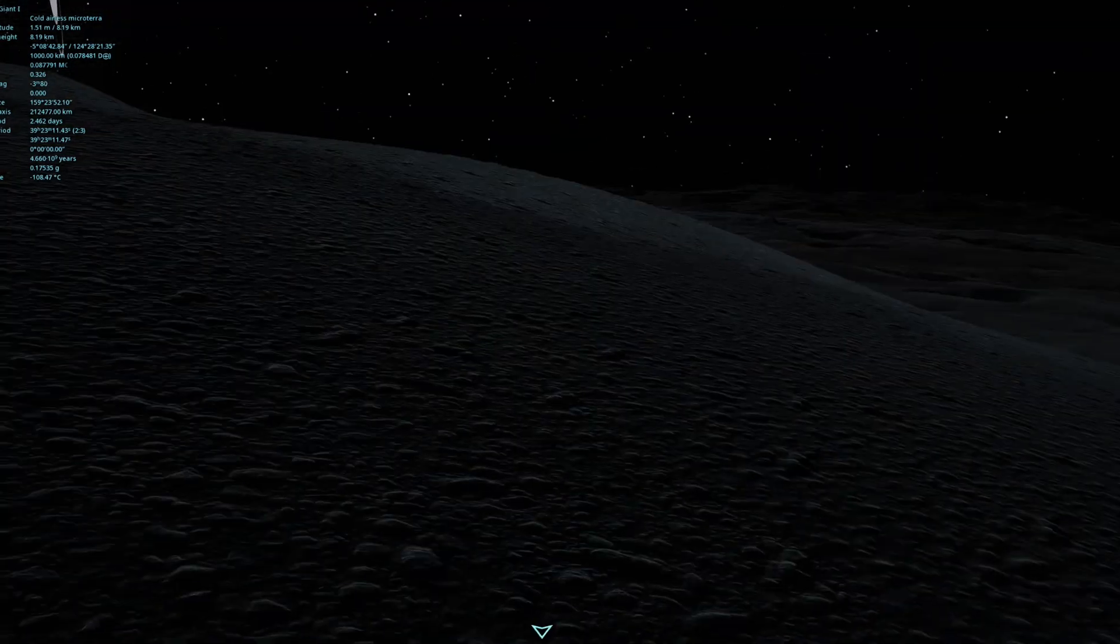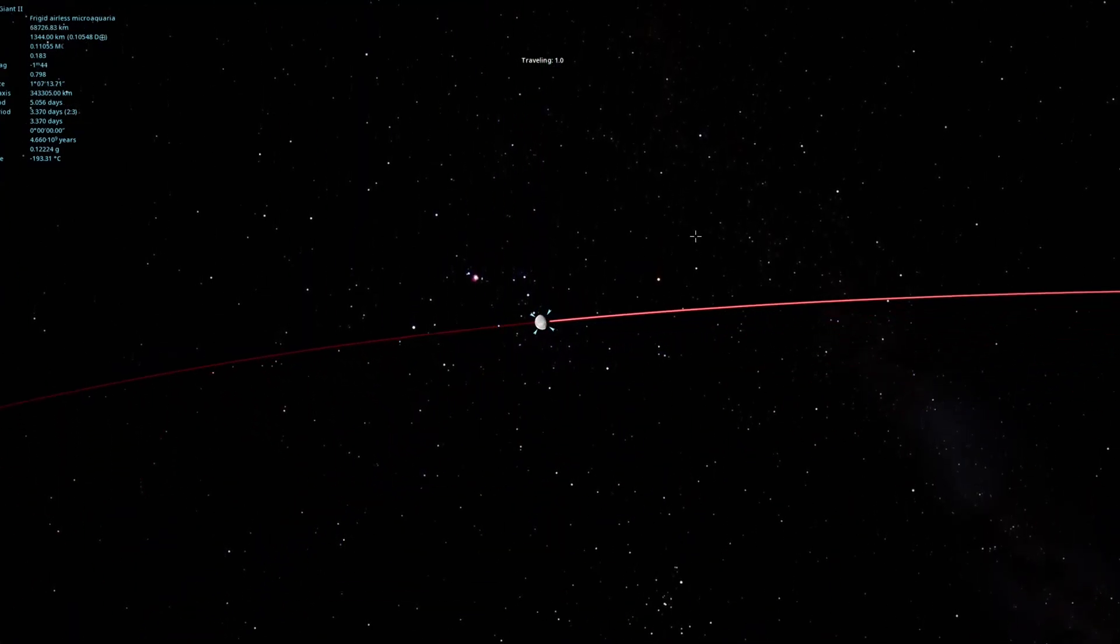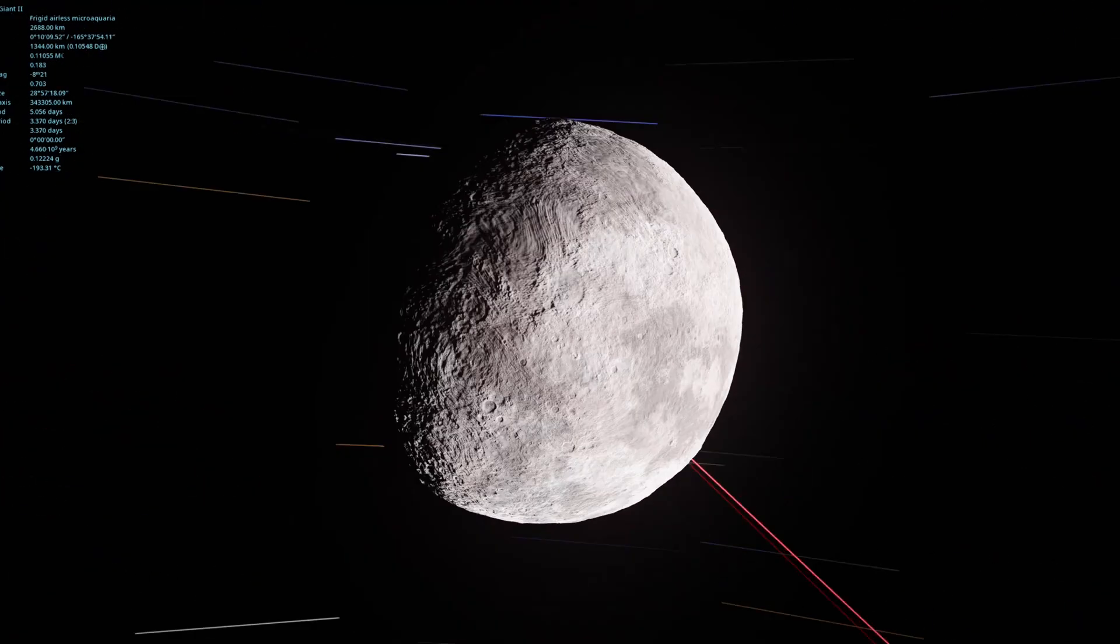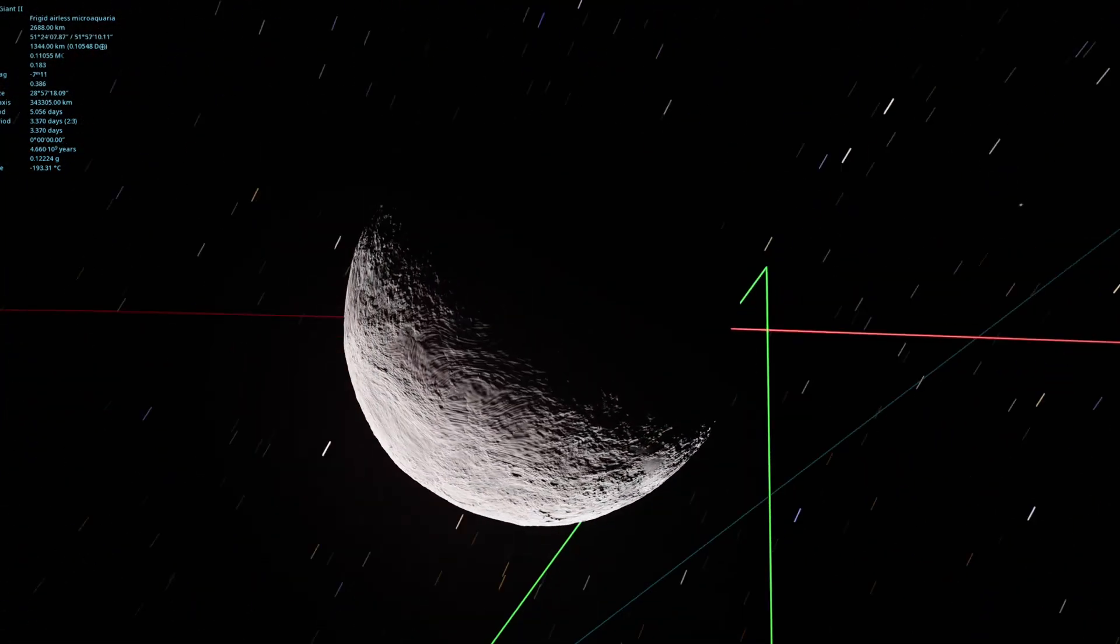And the second and last moon here looks pretty similar to our moon, actually. Also kind of has that brushstroke pattern. So yeah, Boreas is actually a planet. I think they've made a little typo